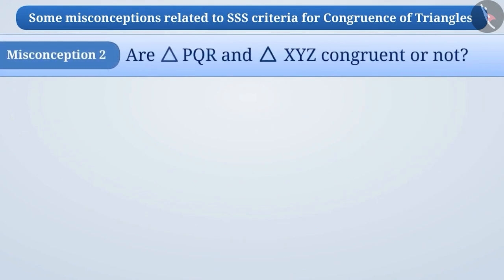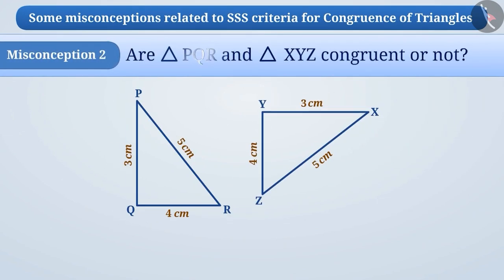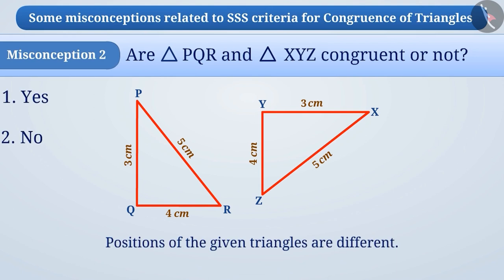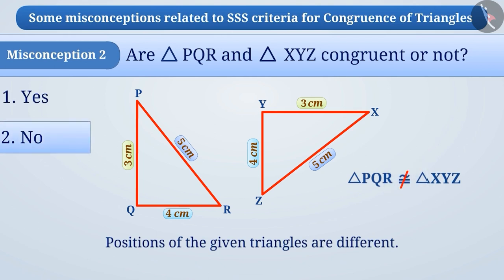Misconception 2: Are triangle PQR and triangle XYZ congruent or not? Some students see that the positions of the given triangles are different. They fail to notice that the lengths of their corresponding sides are equal. With this understanding, they believe that the given triangles are not congruent, so they select option 2, which is the wrong answer.